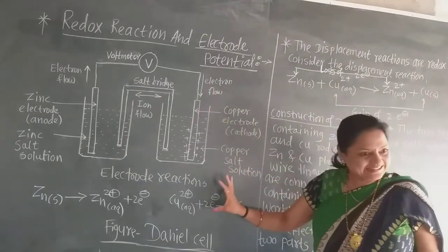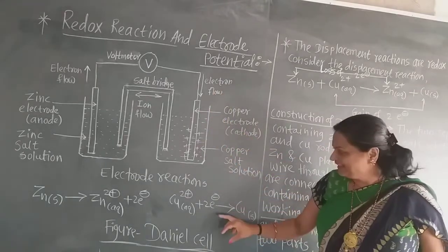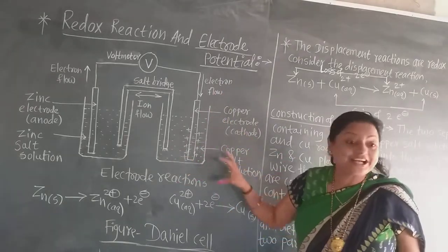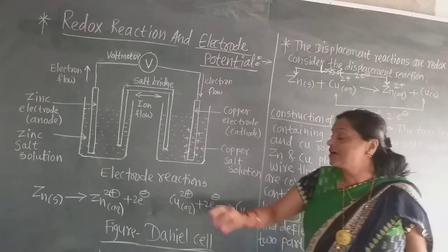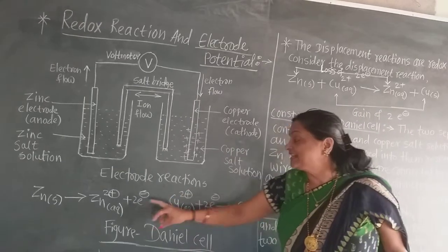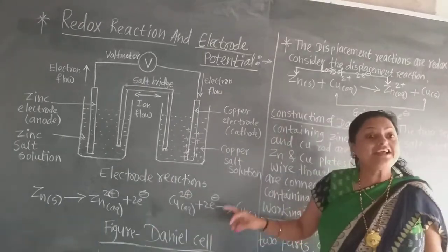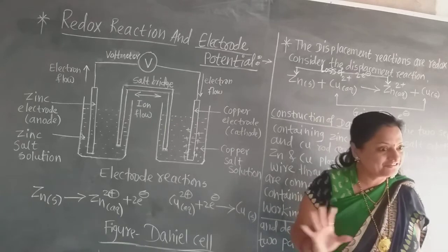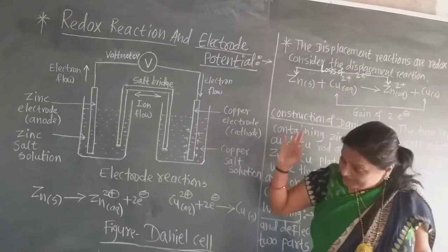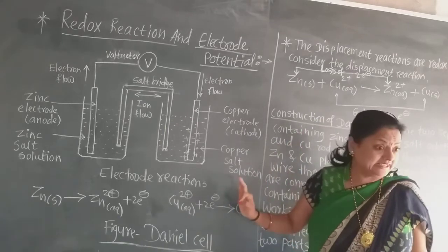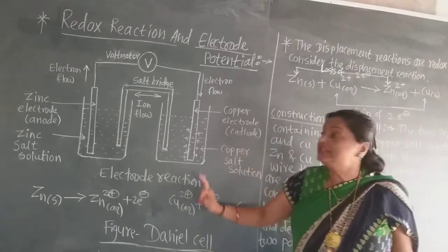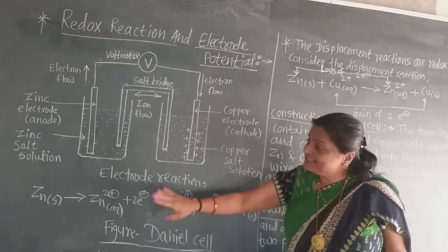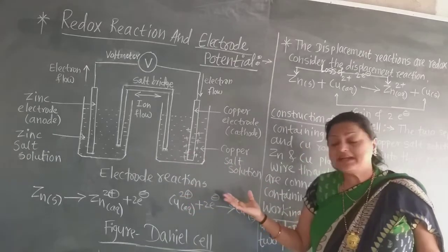In this half-cell there is reduction. So this is the redox reaction because oxidation and reduction take place simultaneously. This is the redox reaction, and this is also the displacement reaction.